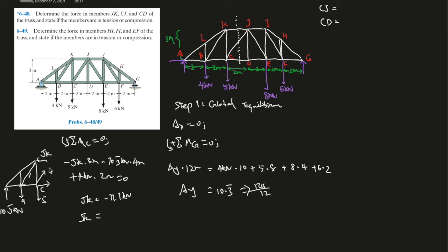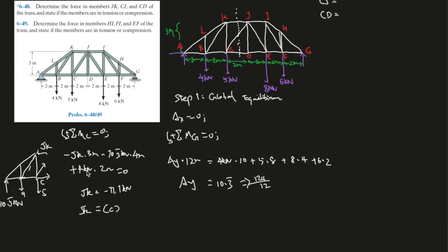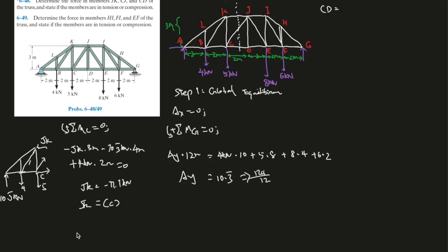Minus 10.3 times 4 meters, by the moments generated by AY, and plus this force is going this direction counterclockwise, so plus 4 kN times another 2 meters. In the end, everything equals to zero. So in the end, JK should give you negative 11.1 kilonewtons.